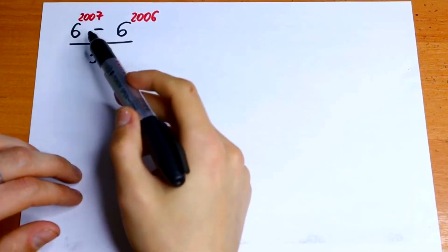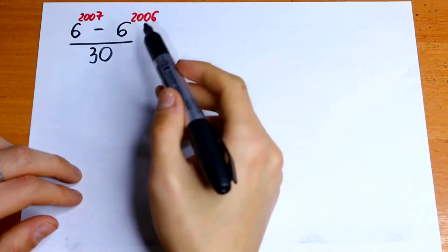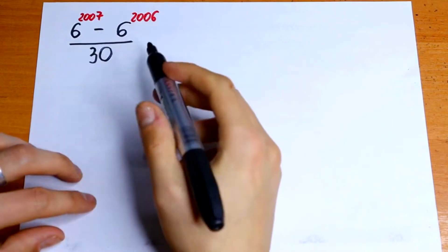6 to the 2007 power minus 6 to the 2006 power over 30. So we need to simplify this a little bit.